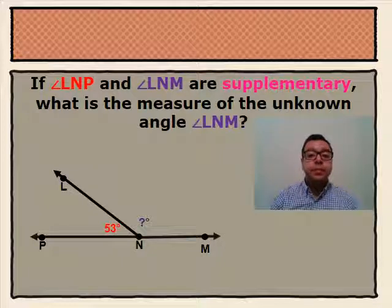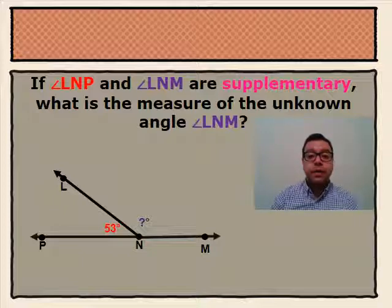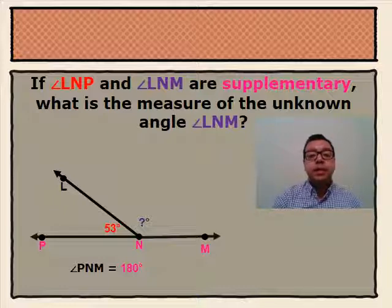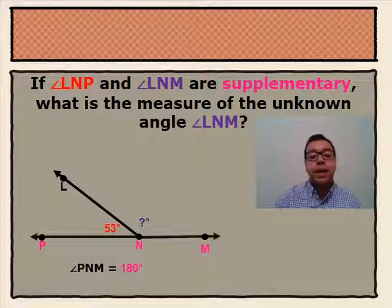If angle LNP and angle LNM are supplementary, what is the measure of the unknown angle, angle LNM? When two angles are supplementary, that means that the sum of the two angles is equal to 180 degrees. So the measure of angle PNM is 180 degrees. Taking our total of 180 degrees and subtracting our known angle, angle PNL, 53 degrees, we'll be able to find our unknown angle, angle LNM.